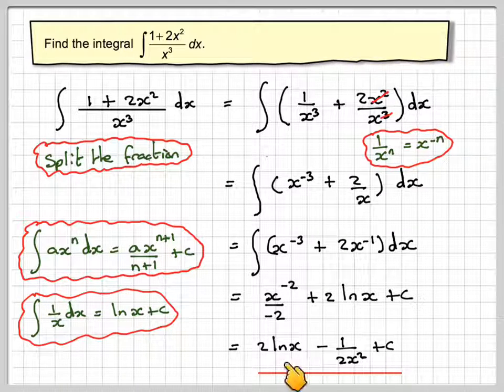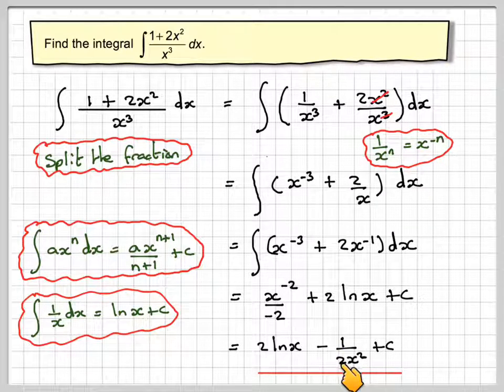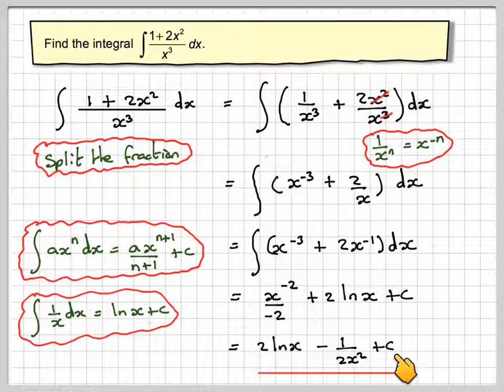OK, so the final answer is 2ln(x) - 1/(2x²) + c.